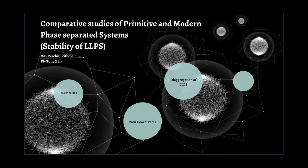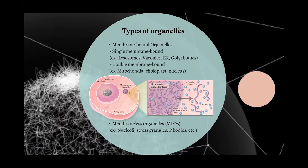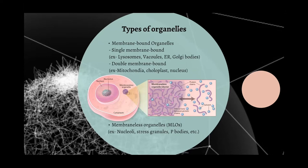Basics of LLPS: cells contain various types of organelles differing in size, shape, function, and composition. Eukaryotic cells show further distinctions in organelles based on the cellular membrane surrounding them. Organelles can be categorized into membrane-bound and membrane-less organelles. Membrane-bound organelles come in two types: single membrane-bound and double membrane-bound.